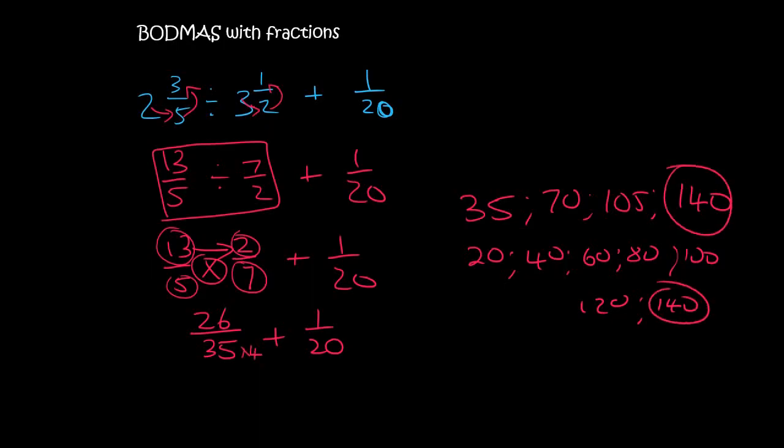So we have to times this one by 4. But what you do to the bottom, you do to the top. For the 20, it's 1, 2, 3, 4, 5, 6, 7 until you get to 140. And so 26 times 4, guys, please use your calculator for this. It's absolutely fine.